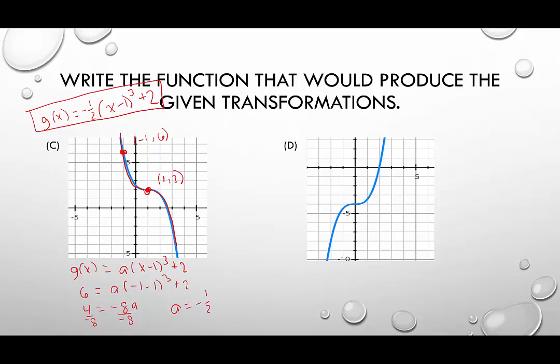In our last example, I noticed that the graph here is concave down and here is concave up. So this should have a positive a value. And I see that point of inflection appears to be right here on the y-axis at 0, negative 4. So initially starting this out, we're going to say g of x is equal to a times x cubed minus 4.